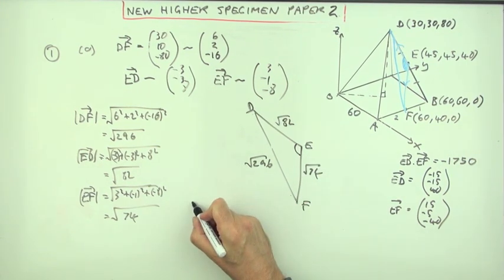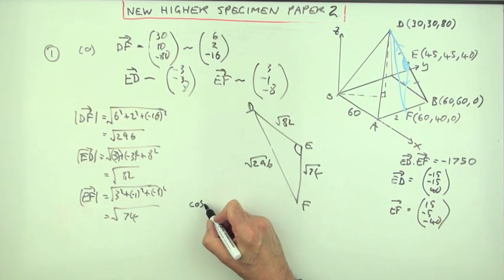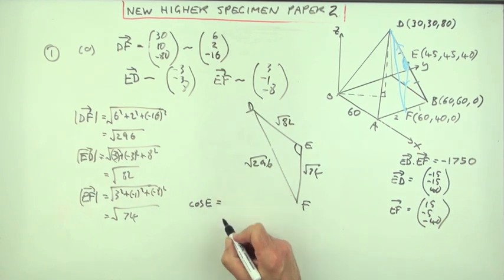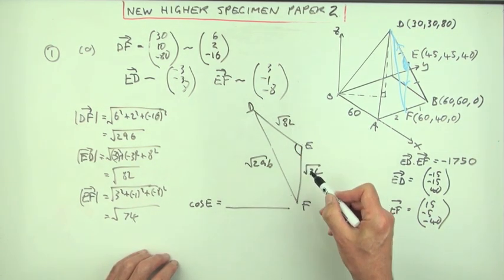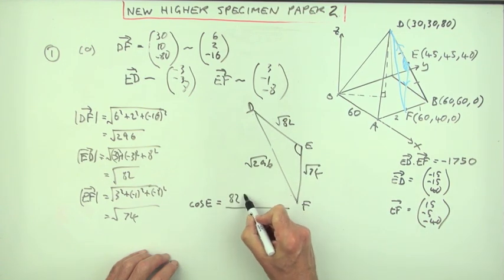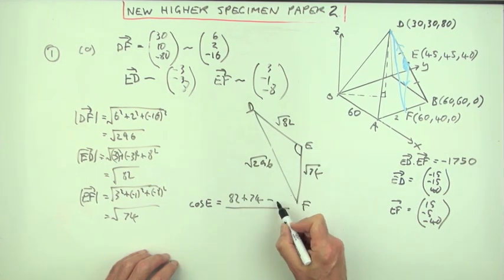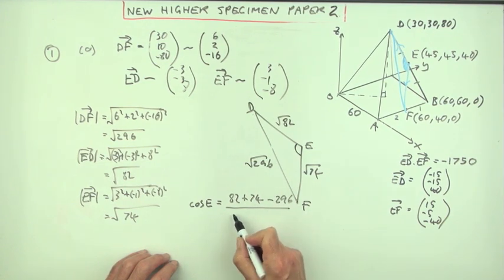So what's the size of that angle? Well the cosine of that angle, we'll just call it E, is, remember the way it works, cosine rule? Square these two sides, well that's easy, that'll just go back to 82 and 74. Take away the square of that side, so let's take away 296.